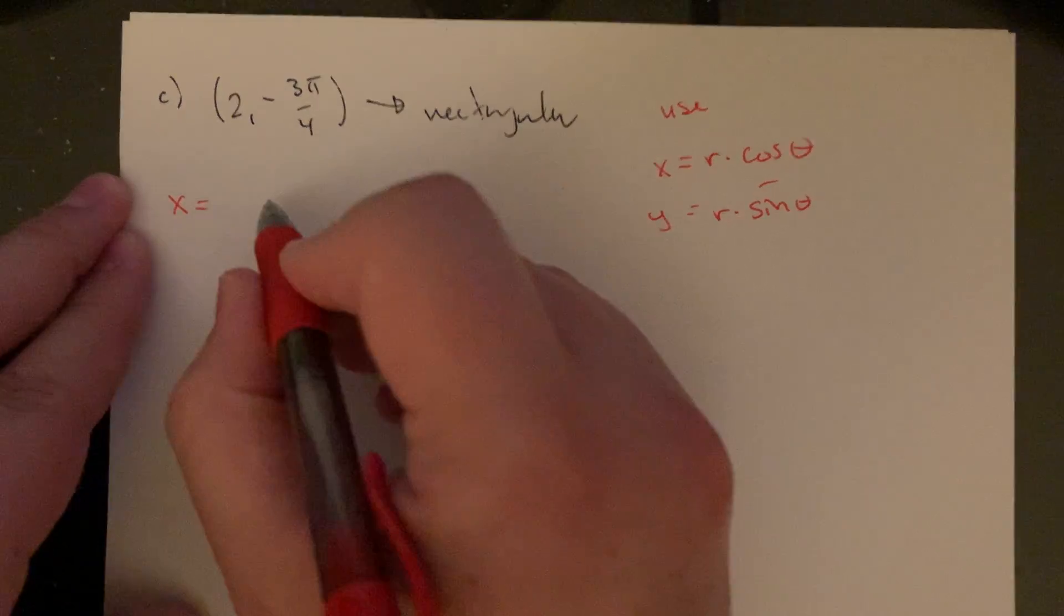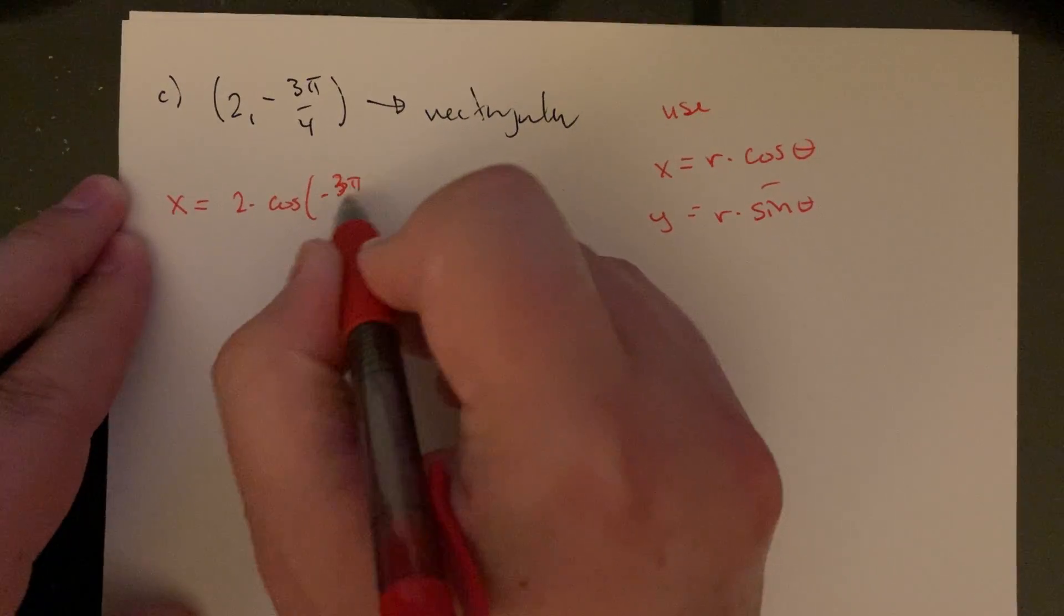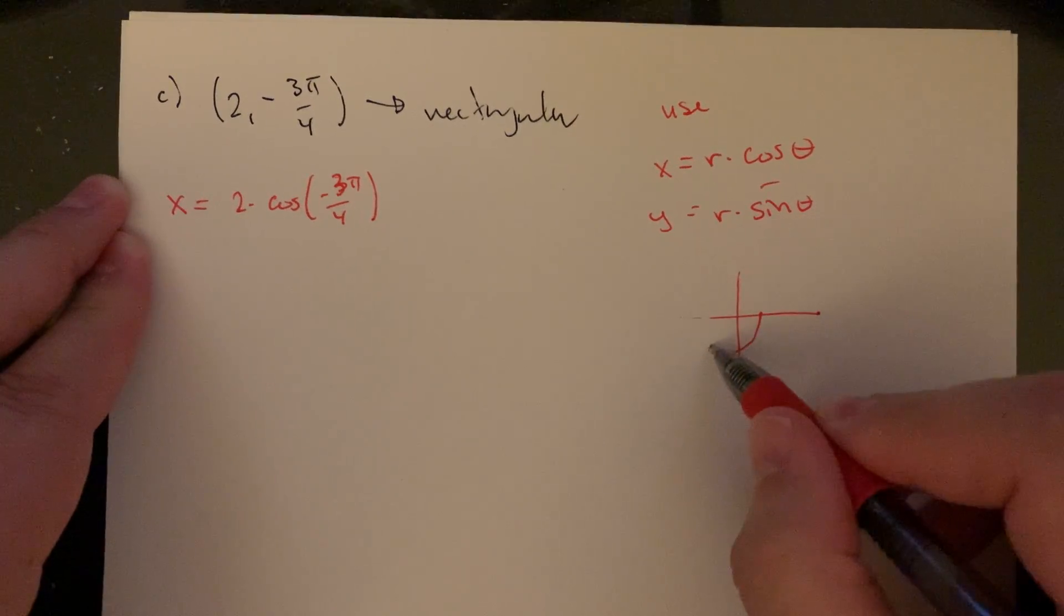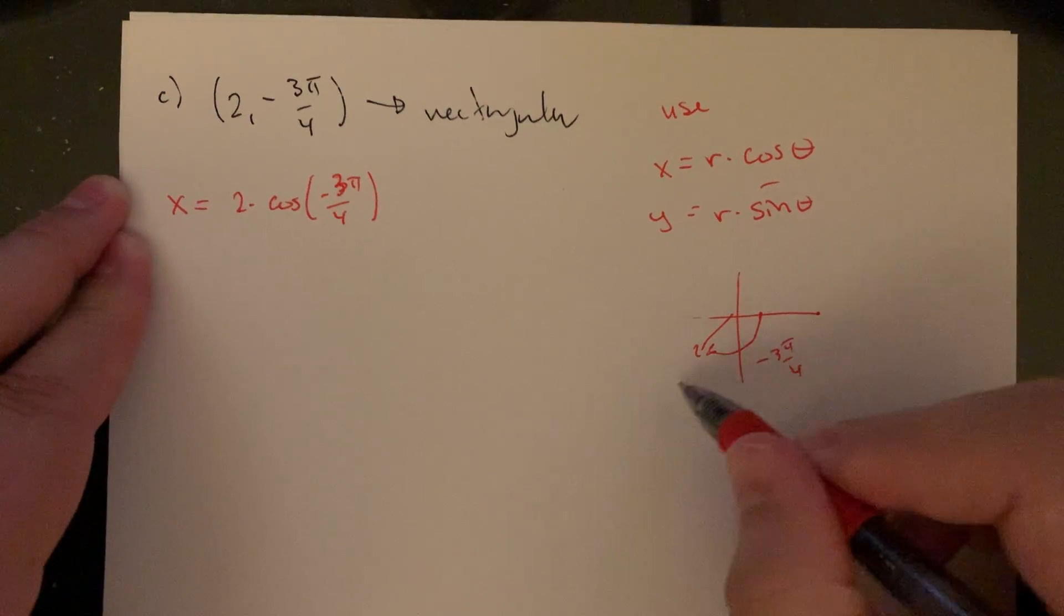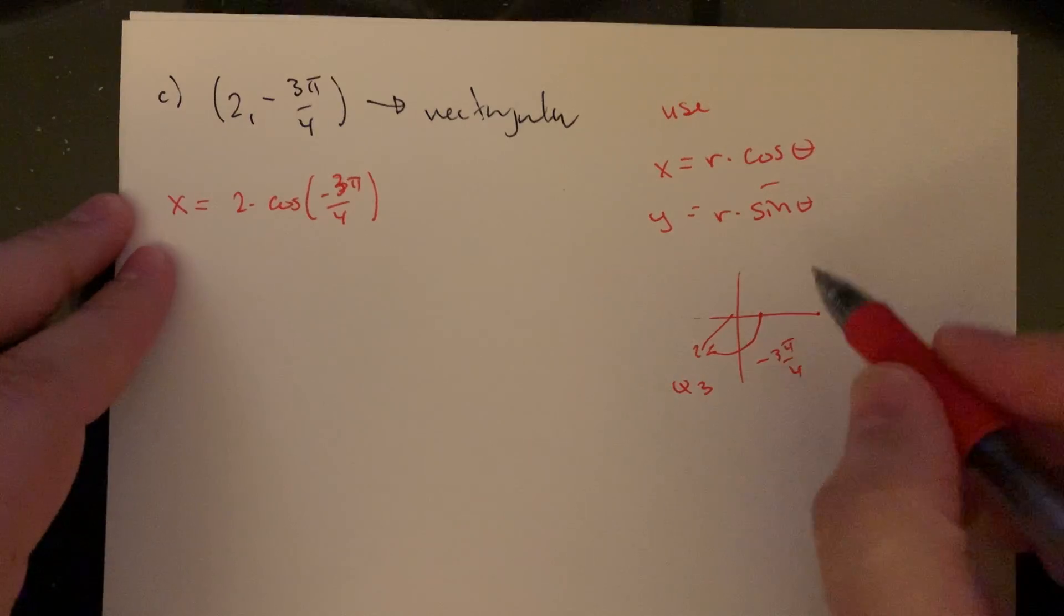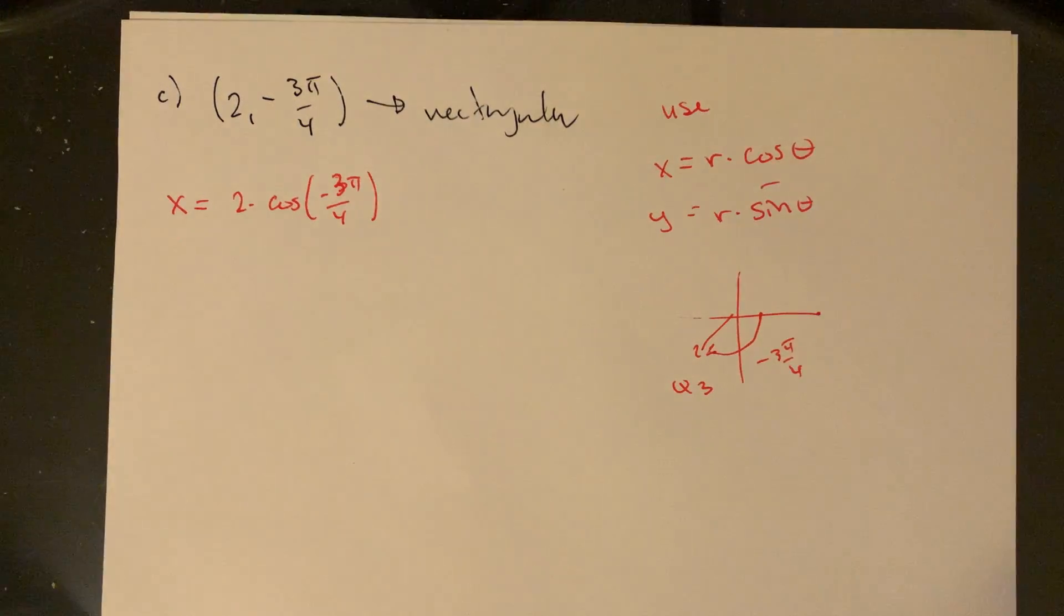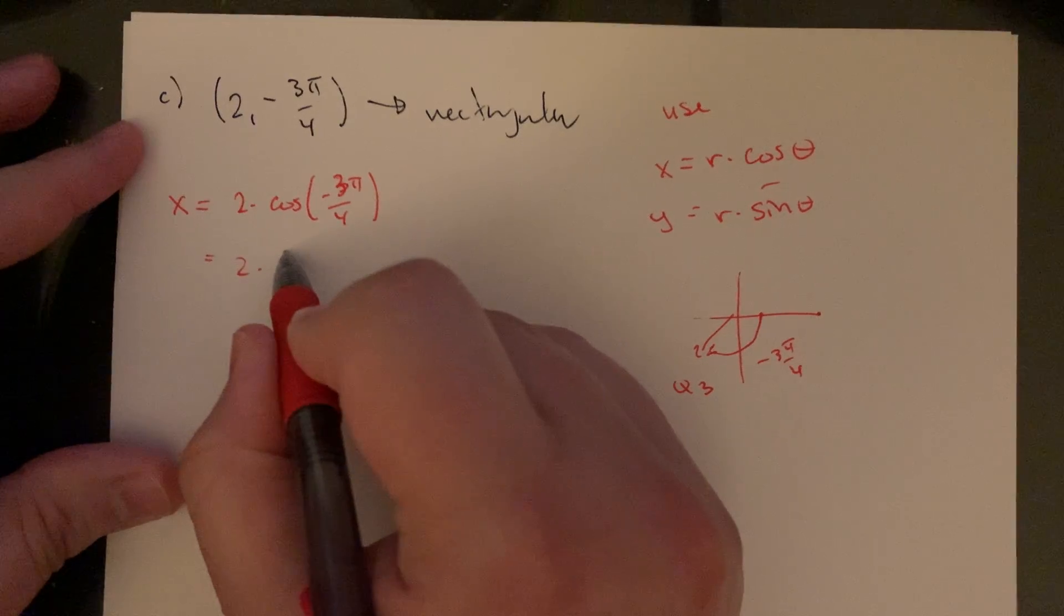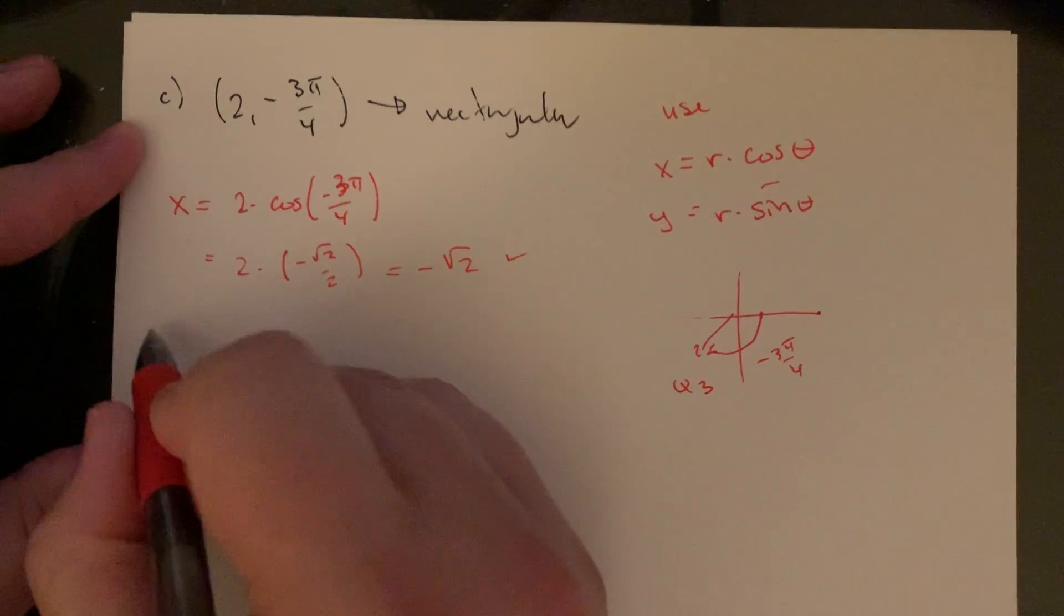So the x here would be 2 times cosine negative 3 pi over 4. Where's that angle? Negative 3 pi over 4? That would be back here in quad 3. So if we check a unit circle, it would be coterminal with 5 pi over 4. What's going to happen there? Sine and cosine are both negative. They would be negative root 2 over 2. So 2 times negative root 2 over 2, so that would just be negative root 2. So that's my x.